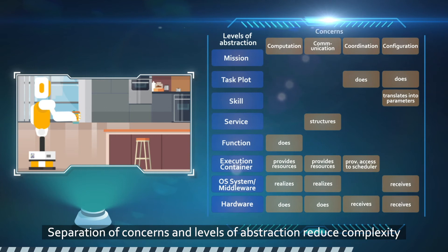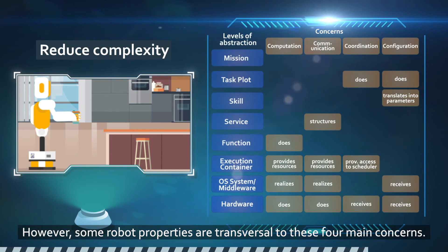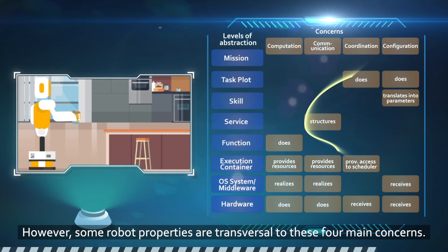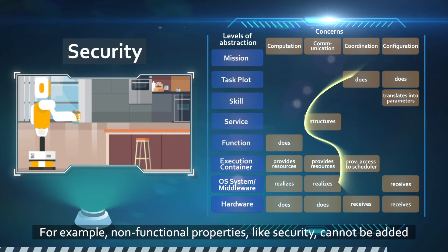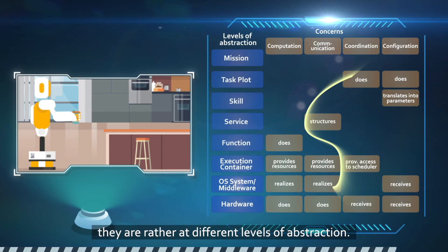Separation of concerns and levels of abstraction reduce complexity since they split up a system into parts and develop solutions for each piece. However, some robot properties are transversal to these four main concerns. For example, non-functional properties like security cannot be added to an application by introducing a module — they are rather at different levels of abstraction.